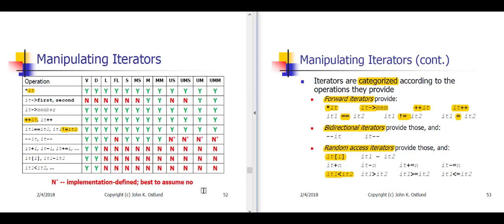Taking a look at this table on slide 52, we see that all dozen of these container types support forward iterators. That is, they support all of the necessary operations shown for forward iterators here on slide 53.